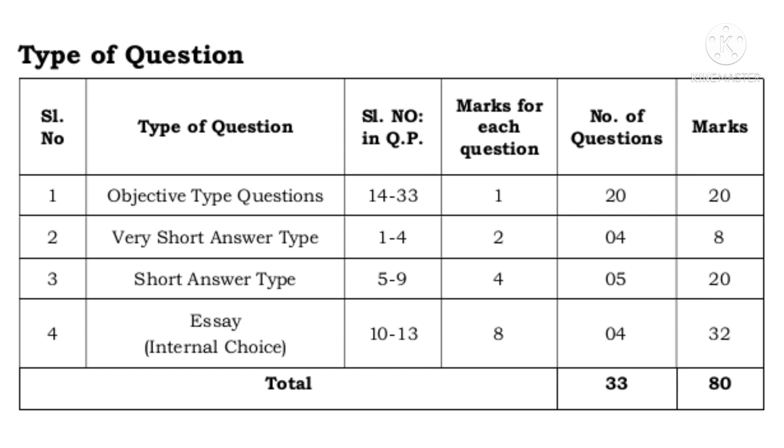Number 2, very short answer type questions are from question number 1 to 4. Each carries 2 marks, there are 4 questions, so 4 into 2 is 8 marks.